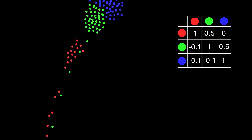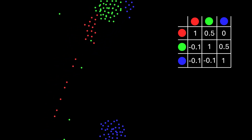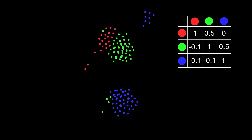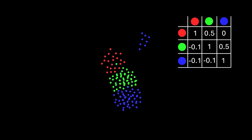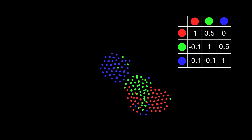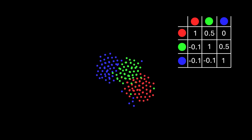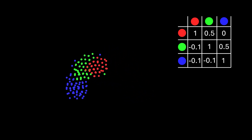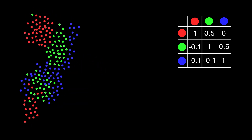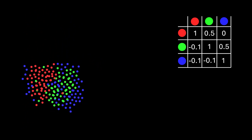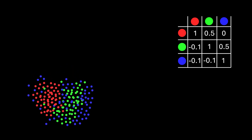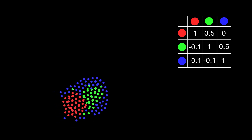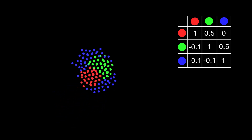In this example there is a value of one at the junction of the two red circles. This means that when red particles interact they strongly want to be near each other. The green particles also have a one at their junction, as do the blues, which simply means that particles of the same colour are going to clump together. Red particles are also attracted to green particles but at only half the rate of the red-red interaction, meaning groups of red particles will attach themselves to groups of green particles but won't mingle, as their preference is to stick with particles of the same colour.